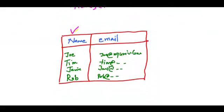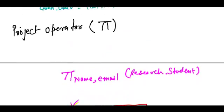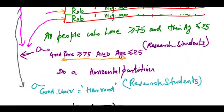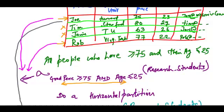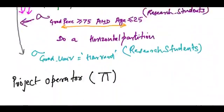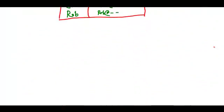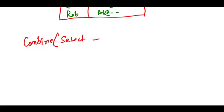So this is used to do vertical partition. Select operation is used to do a horizontal partition. We can also combine select and project.